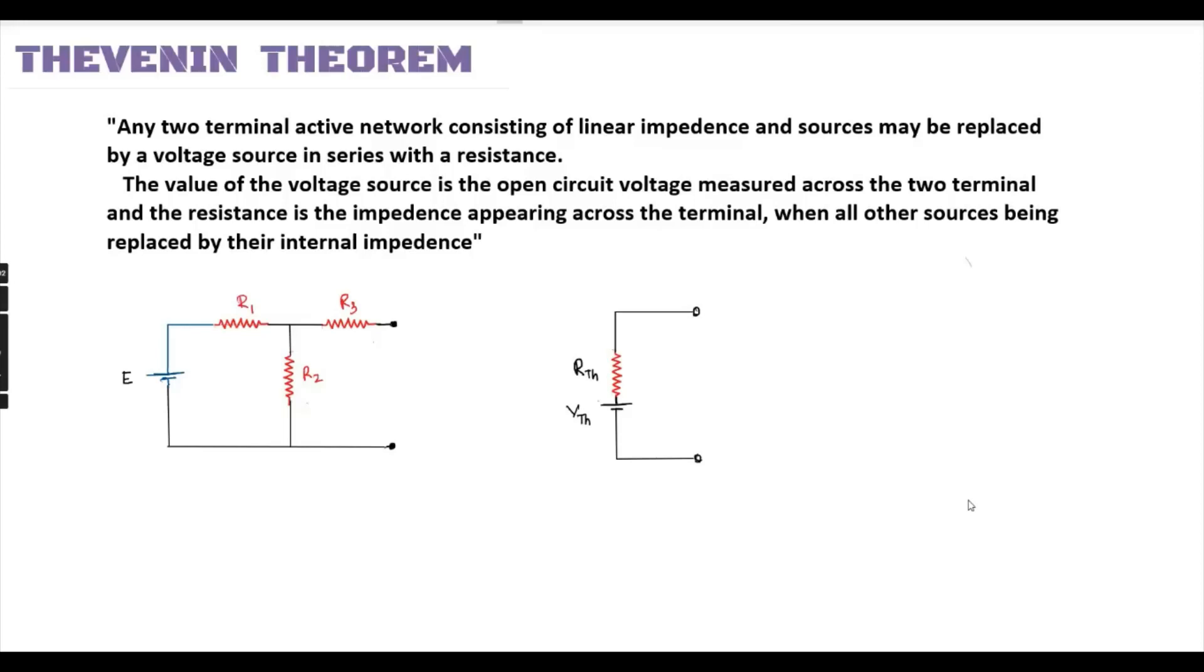Thevenin theorem states that any two terminal active network consisting of linear impedances and sources may be replaced by a voltage source in series with a resistance.